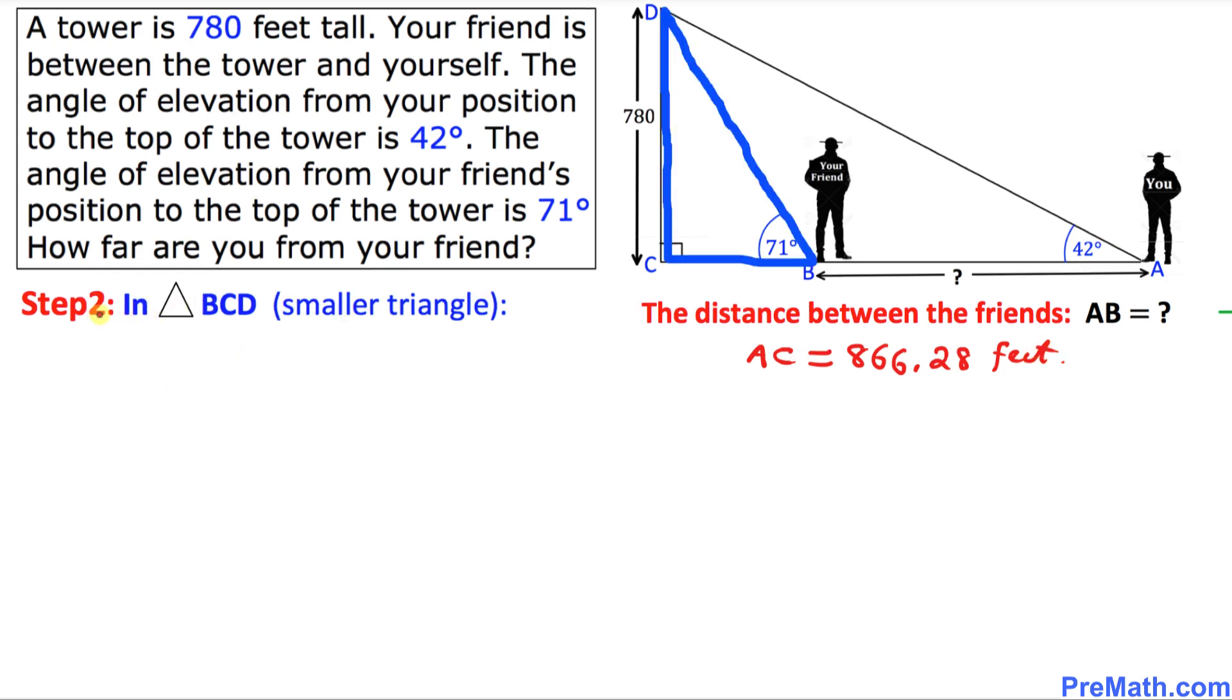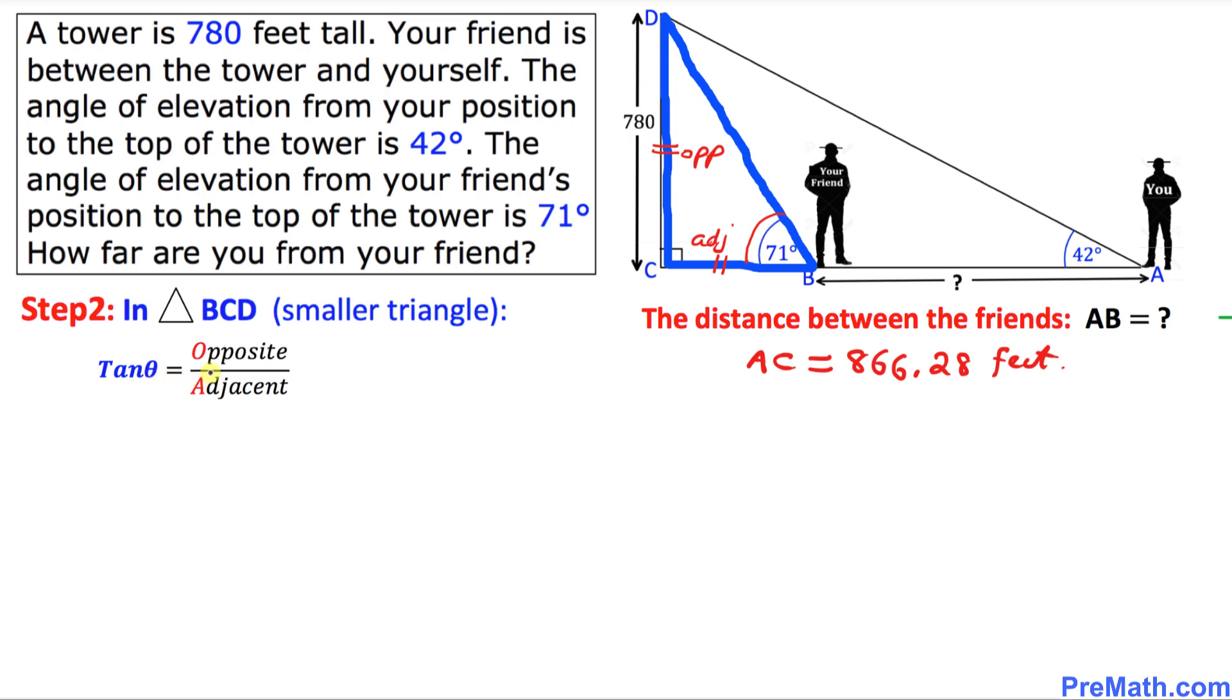And now in our next step we are going to focus on this smaller triangle BCD. As you can see this time the angle of elevation is 71 degrees. So that means this side is going to be our opposite side, and this is going to be our adjacent CB or BC. So we will be using tangent theta which is equal to opposite over adjacent.